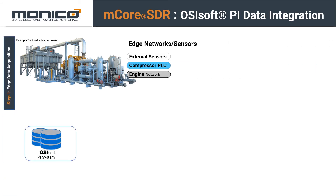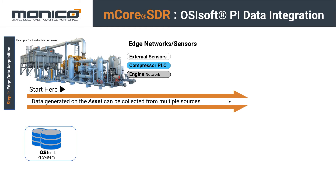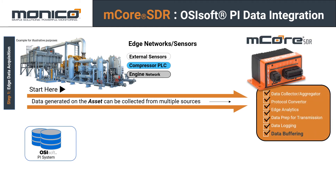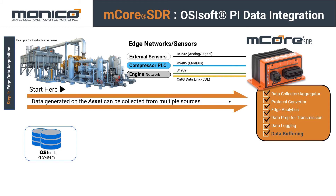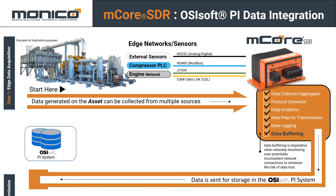Let's take a closer look at how data actually flows. You have a compression site with its edge network, engine, and PLC. The mCore collects data from multiple sources simultaneously: RS-232 for external sensors, RS-485 for the compressor PLC, and J1939 or CAT Data Link for the engine network. The mCore is the data collector and aggregator, handling protocol conversion, edge analytics, and data prep. Data buffering is important here to capture a complete picture of what's happening.